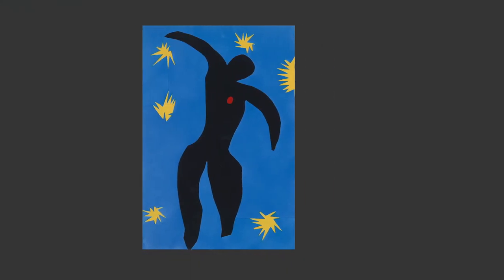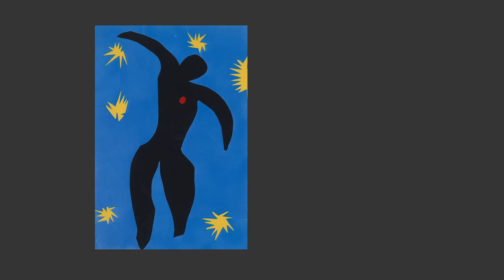I'm going to show you what I mean with a demonstration using a very famous cutout by Matisse called Icarus. I chose this image because it's very simple, which made it easier to prepare this demonstration. The colors are obvious: red, blue, black, and yellow. And the values are almost as obvious — the yellows are light, the red and the blue are medium, and the black is dark.